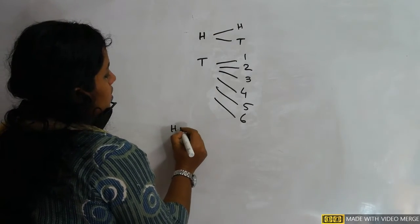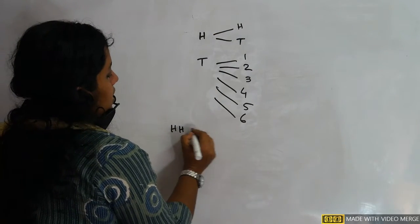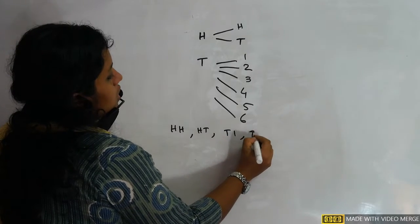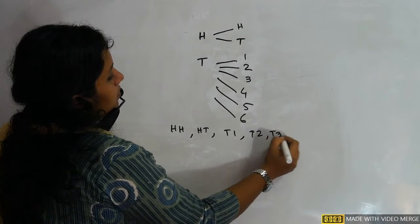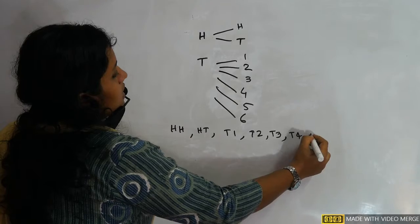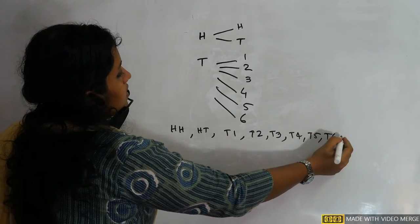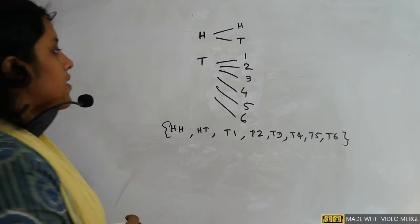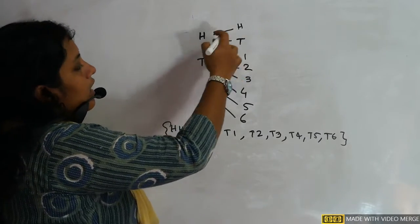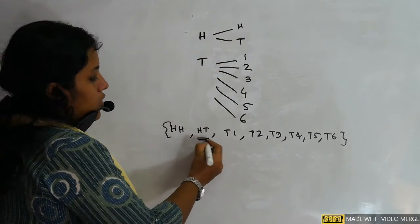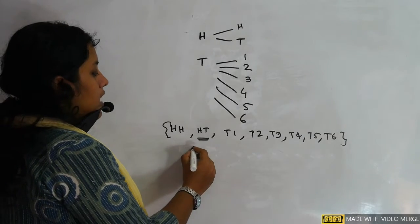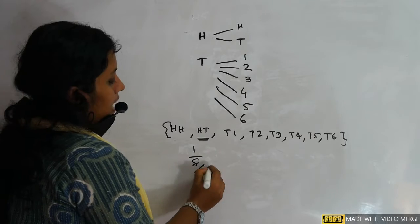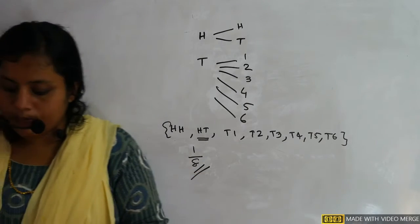The sample space is: HH, HT, T1, T2, T3, T4, T5, T6. These are the elements of the sample space. I need to get one head and one tail, which is HT — that's one outcome. So the probability is 1 divided by total 8. The answer is 1/8.